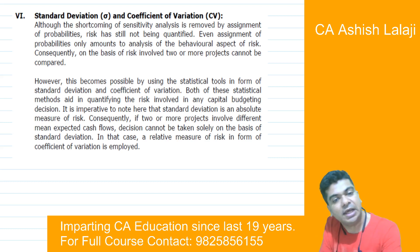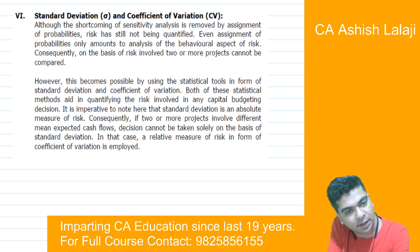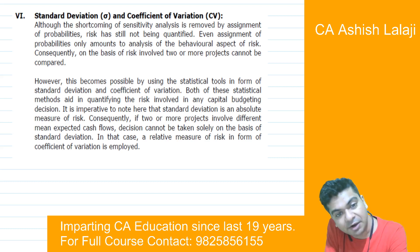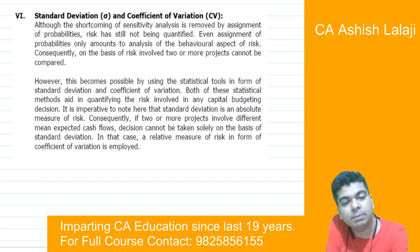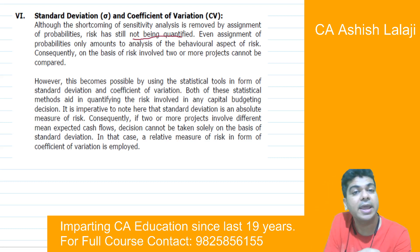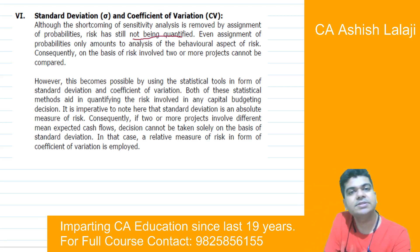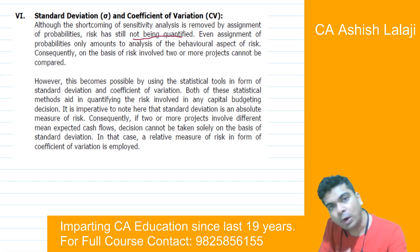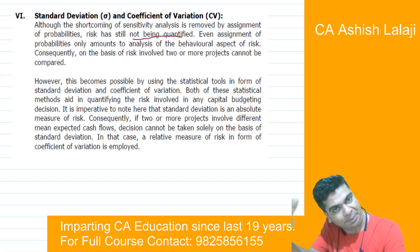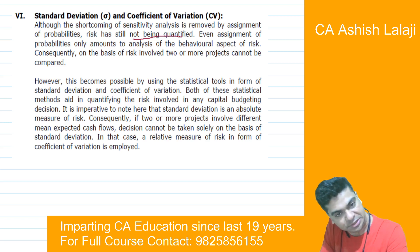If you see the write-up, that's the same thing we are discussing — risk has still not been quantified. You are still not able to quantify the risk. If you say risk is there, how much? What can be the fluctuation on the upper side or on the lower side? I don't have answers for the same.